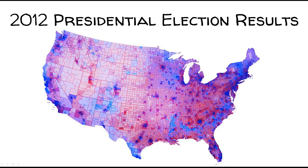This is the 2012 presidential election results map — a choropleth map of the contiguous United States by county. The presidential election results are represented by the percent of county voters that voted for Obama or Romney. Counties with greater than 50 percent for Obama are blue, and those greater than 50 percent for Romney are red, with deeper colors indicating a higher percentage.